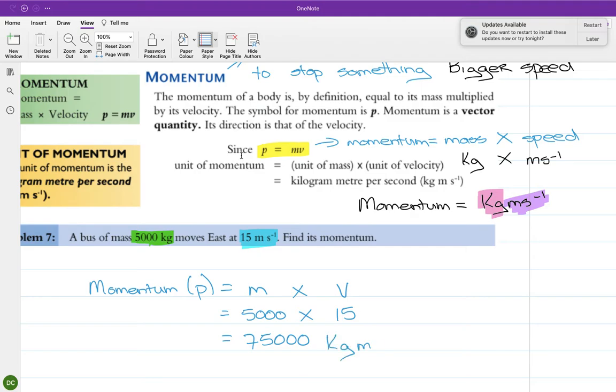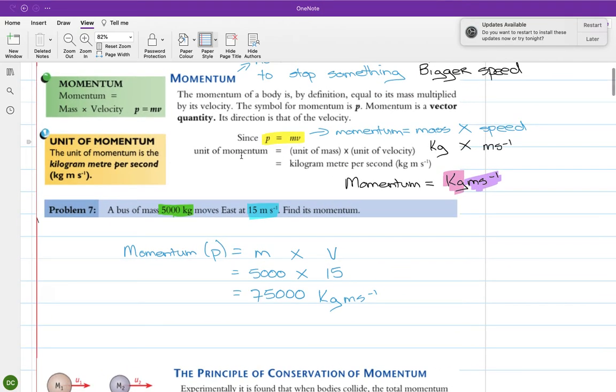So 75,000 is 5000 by 15, and then you put your units down which is kilograms and meters per second. Now the fact that there is a direction in the question should tell us something about momentum.